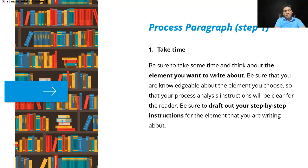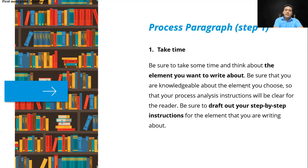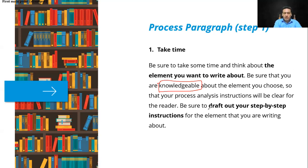First of all, the element that you want to write about — you have to decide first the element you are going to be writing about. After that, be sure you are knowledgeable, meaning that you have the knowledge and information for writing about that. Then be sure to draft out your step-by-step instructions — first I will do this, second I will do this, third I will do this, fourth I will do this. A step-by-step draft for the element you are writing about.